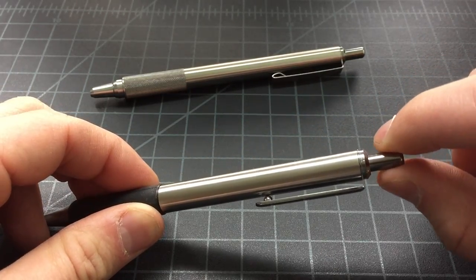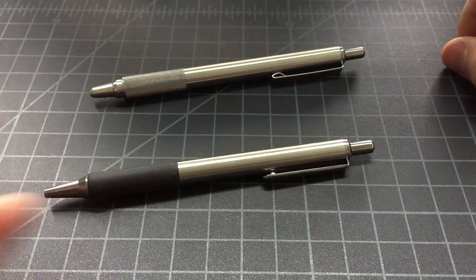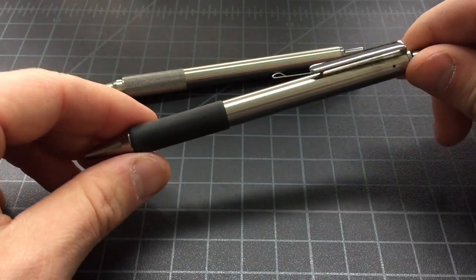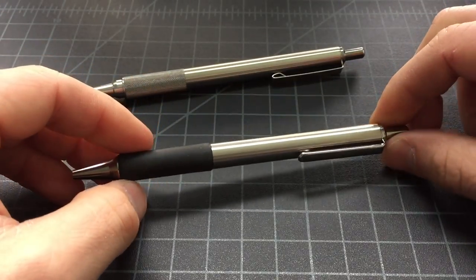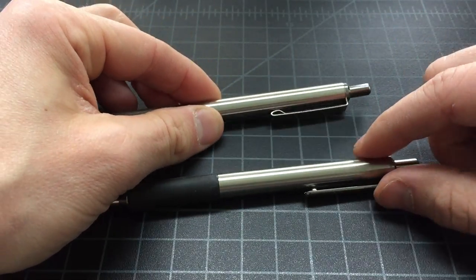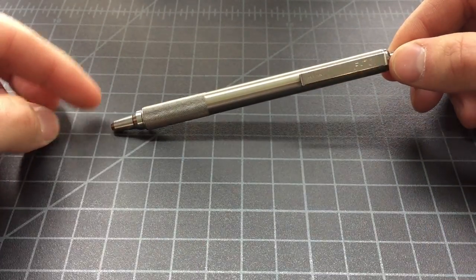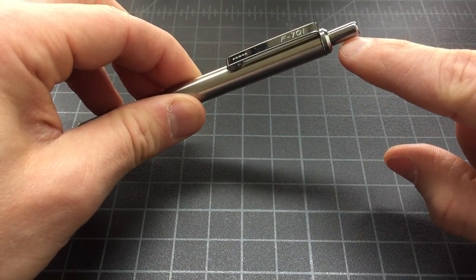What someone found out was that by just with pliers and maybe a flame or possibly a refrigerator and freezer, depending on how you want to do it, you could remove the button mechanism from the cheap 402 and put it in the 701. That leaves you with this right here, which is a full metal including the click mechanism pen.